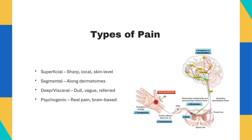Pain comes in many forms. Superficial pain is sharp and localized, affecting only the skin or surface tissue, and is usually easy to pinpoint. Segmental pain travels along a specific dermatome — an area of skin supplied by a single spinal nerve — and can radiate or move along the nerve pathway. Deep or visceral pain is dull and wavering, often harder to locate precisely; it originates from internal organs and is frequently referred to other areas of the body, making diagnosis challenging.